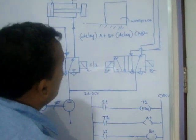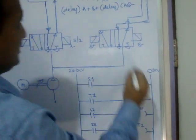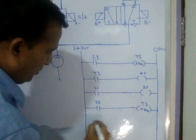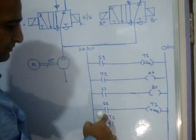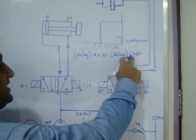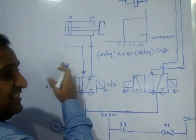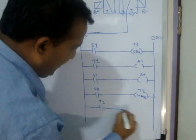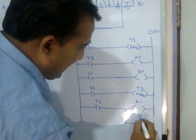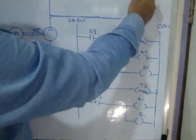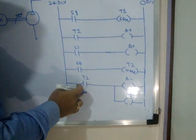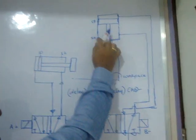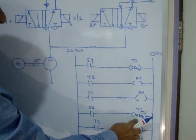After B+ and the piston reaching S4, a second delay timer T2 starts — for the drilling operation, say 10 seconds. It is only when S4 is active that T2 runs. After 10 seconds, T2 turns on. The next task is A- and B- simultaneously: A- retracts the first cylinder, B- retracts the second cylinder at the same time, saving time and increasing productivity.